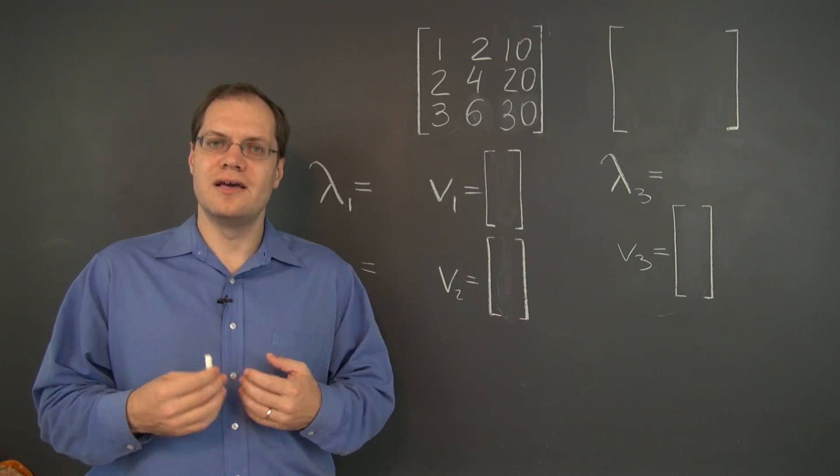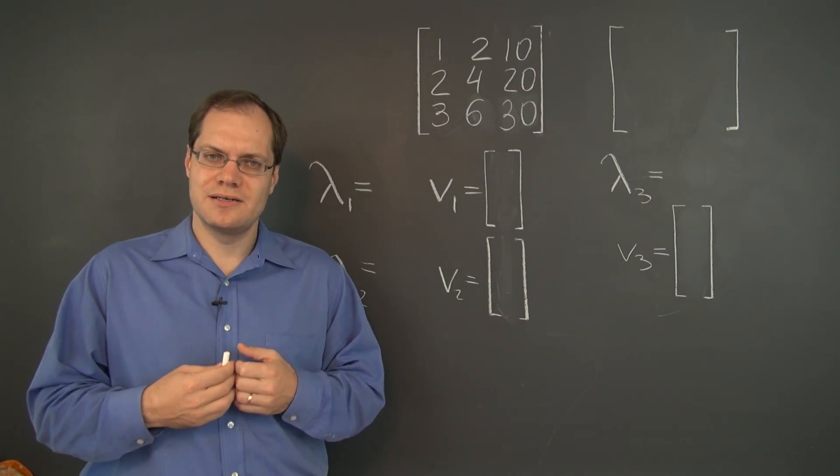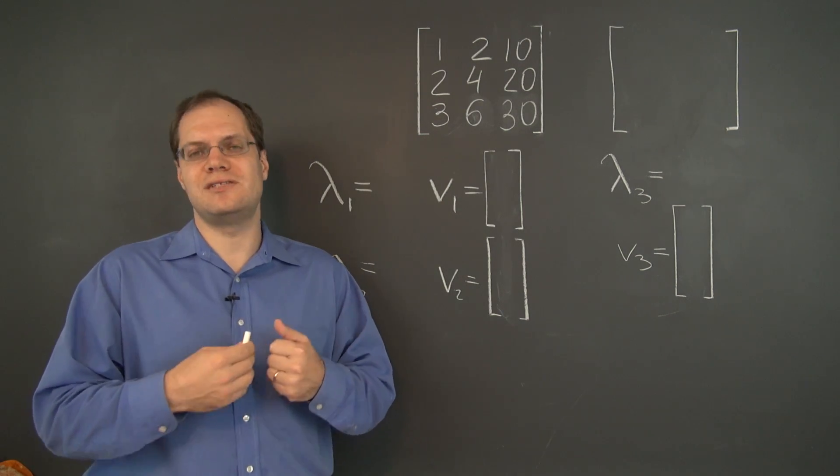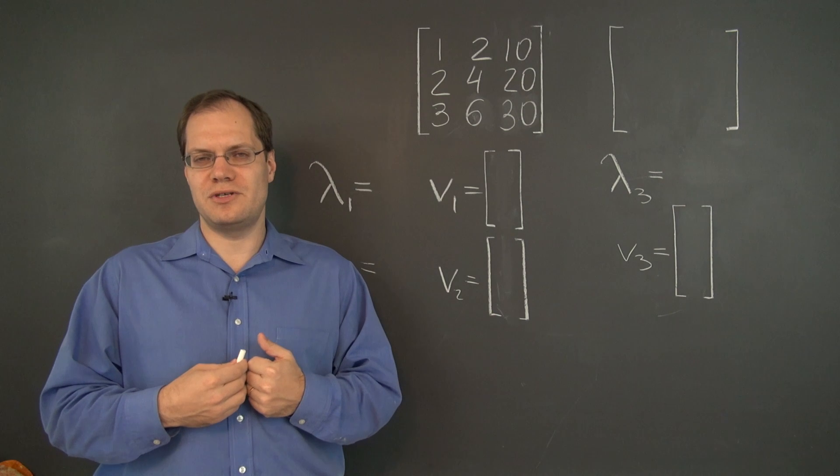In other words, if you look at a matrix and you realize that it's singular and has a nontrivial null space, then all of the elements in the null space correspond to the zero eigenvalue. They're all eigenvectors corresponding to the zero eigenvalue.